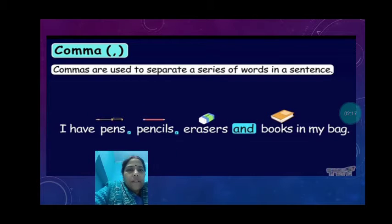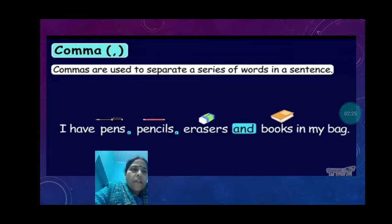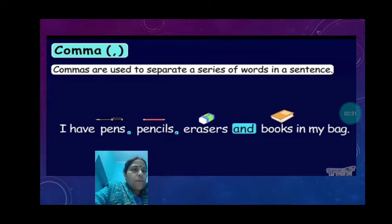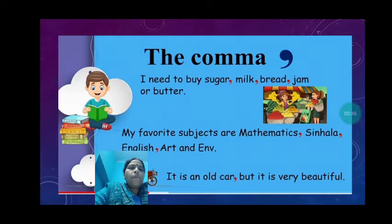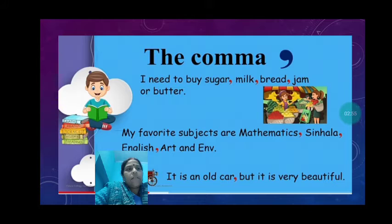I have pens, comma, pencils, comma, erasers, and books in my bag. Notice that after 'erasers' we don't put a comma — instead we use 'and,' which is a joining word, a conjunction. So: I have pens, pencils, erasers, and books in my bag. Similarly: I need to buy sugar, milk, bread, and jam or butter — meaning either jam or butter.